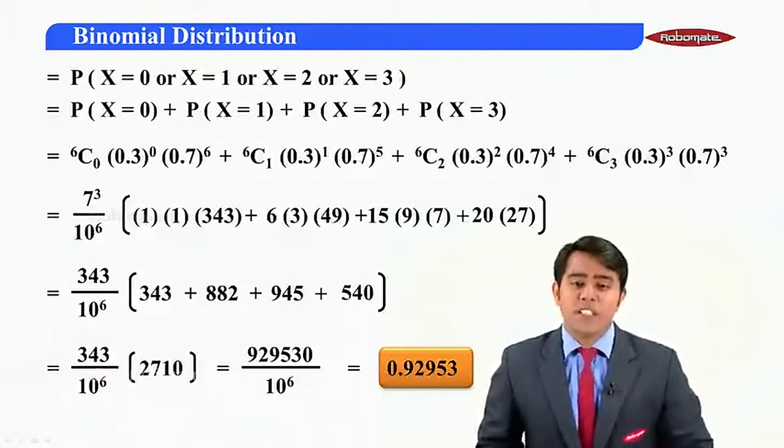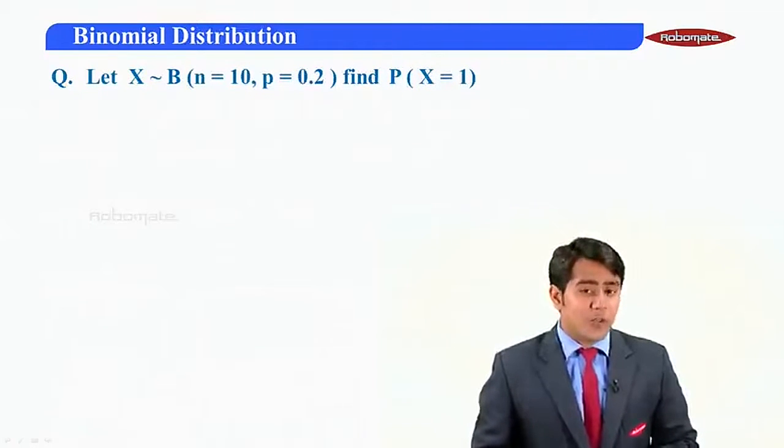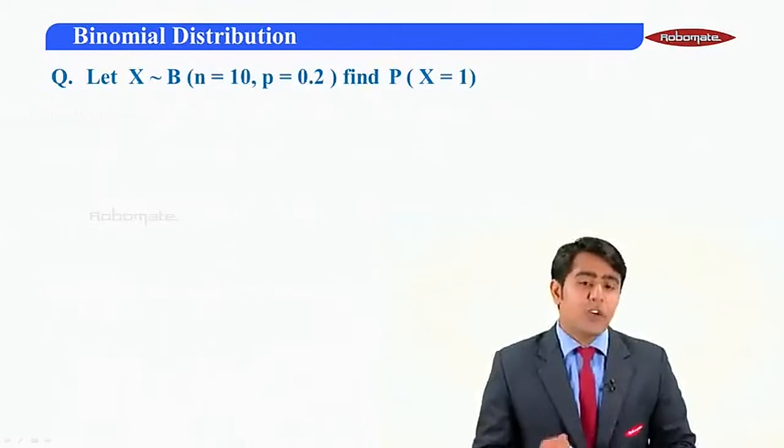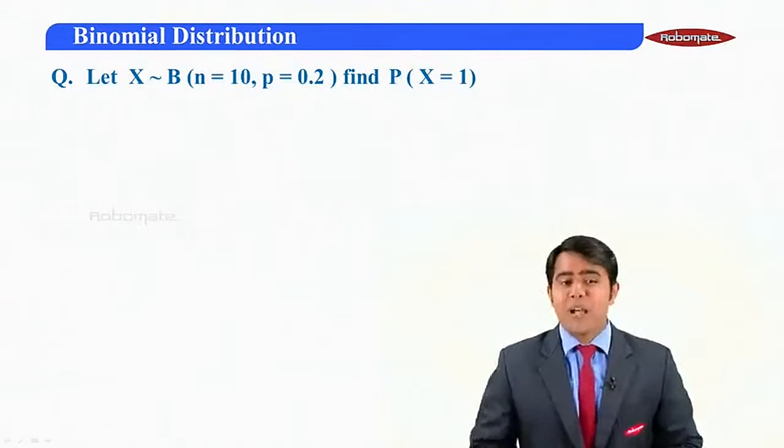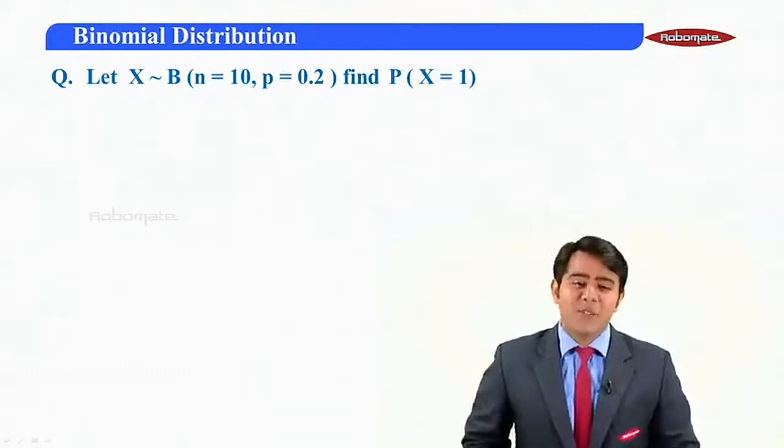Now, let us move further for the next problem here. The next problem given to us is as follows. X follows a binomial distribution for 10 trials having probability of success as 0.2. Then, find P(X=1).